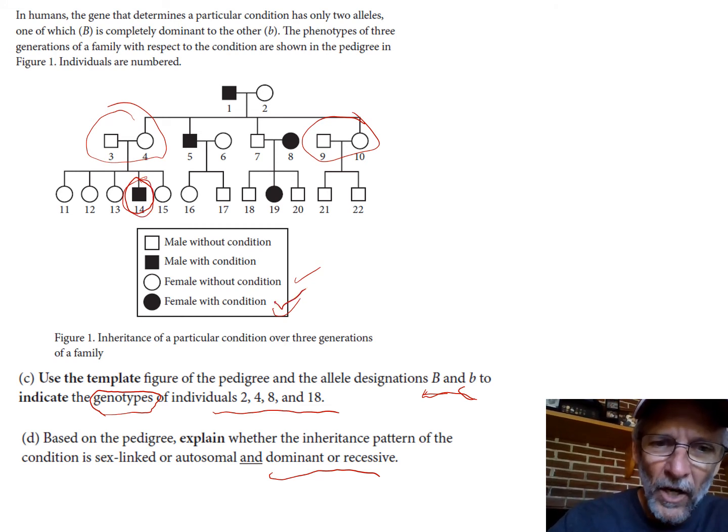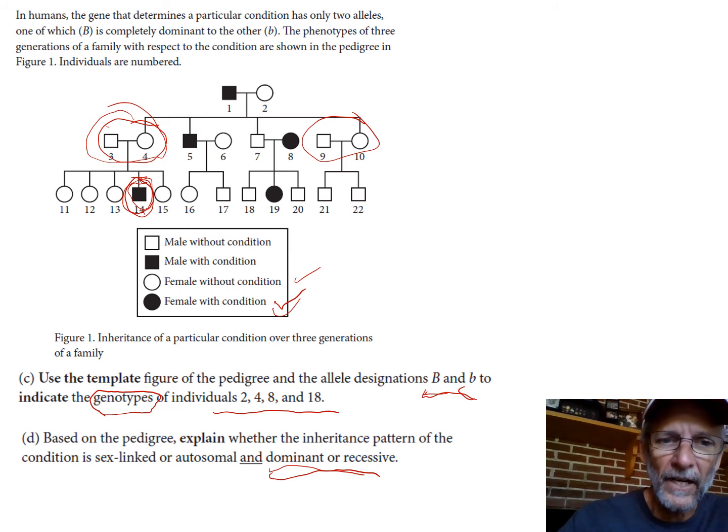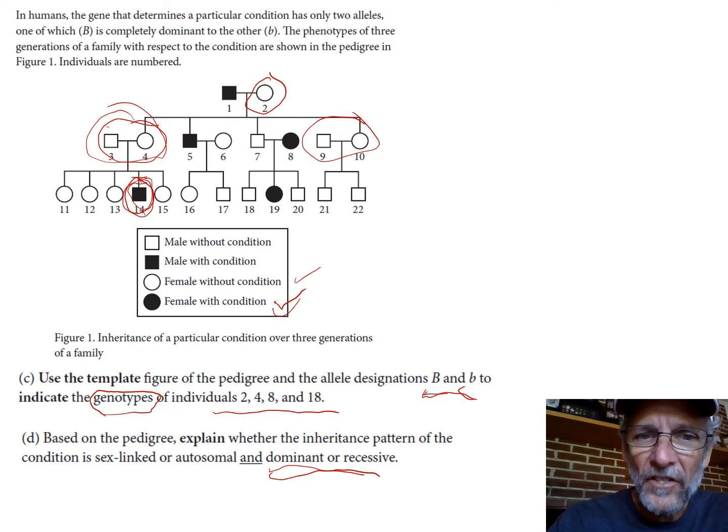This set of parents three and four has this kid 14 that has the other trait. That means that this other trait, shaded in, the condition, must be recessive. Why? Because two parents who have a recessive trait can't have any kids with anything but the recessive trait. So since they had a kid with a different trait, that means they must have the dominant trait, this kid must be recessive, and they must be heterozygous.